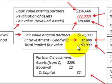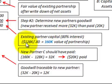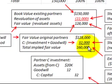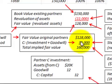We need to determine the total implied fair value of the partnership. The existing partners will hold an 80% interest after the new partner enters, since the new partner gets 20%. So we take the $128,000 revalued capital for the existing partners and divide by 80%, giving us $160,000 as the fair value of the partnership. The total implied fair value is $160,000, and the revalued capital is $128,000 — the difference gives us $32,000, which goes to Partner C being admitted.